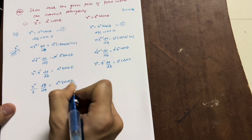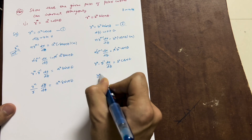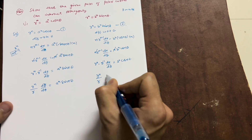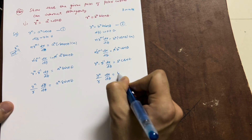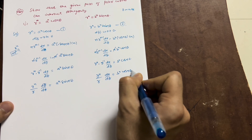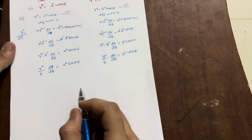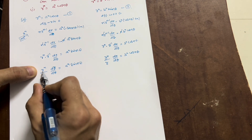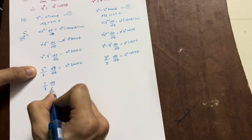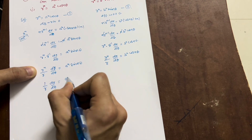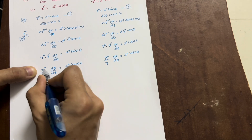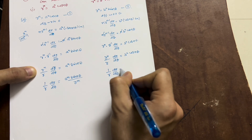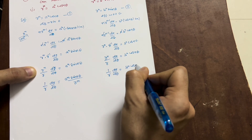Taking r^n to the right-hand side in both equations, we are left with (1/r)·dr/dθ = −a^n·sin(nθ) / r^n for the first curve, and (1/r)·dr/dθ = b^n·cos(nθ) / r^n for the second curve.